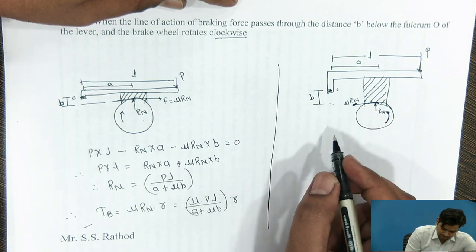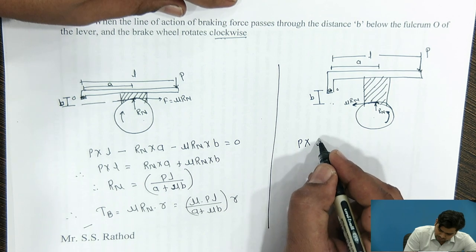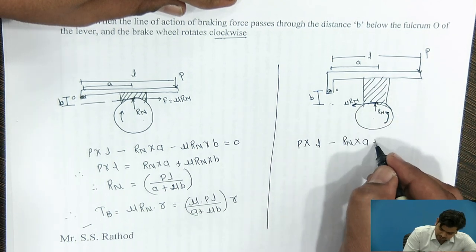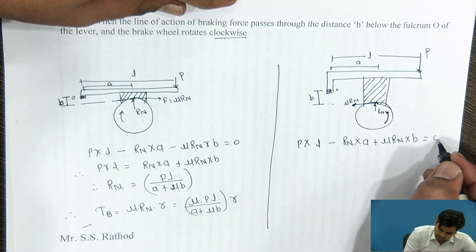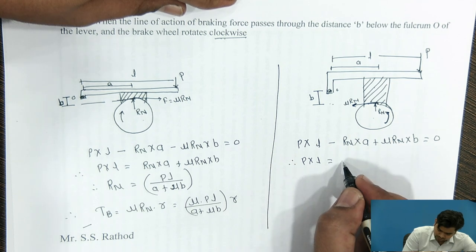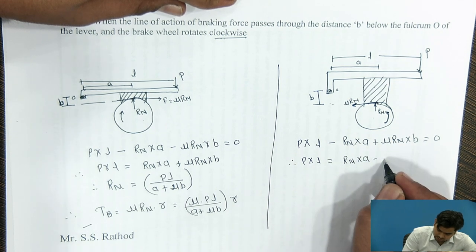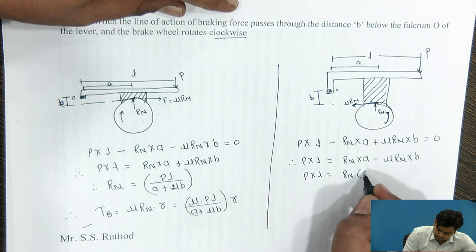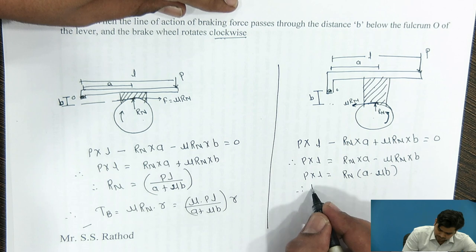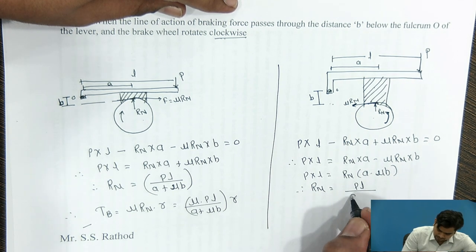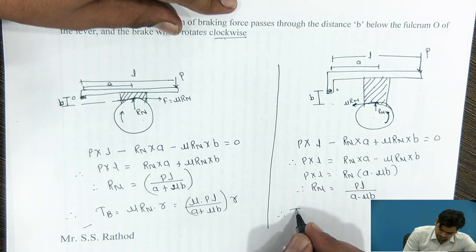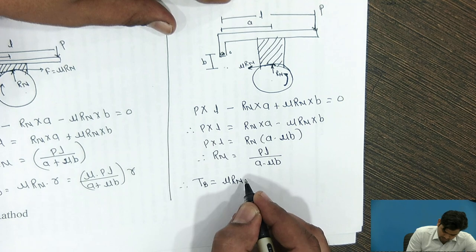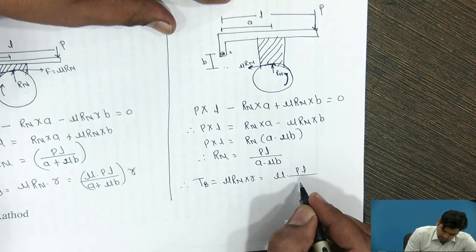Under these circumstances, taking the moment about the fulcrum O: when the line of action of the braking force passes through distance B below the fulcrum O and the brake wheel rotates anticlockwise, the frictional force on the block acts in the reverse direction. We get: P into L minus Rn into perpendicular distance A plus μRn into B equals 0. Therefore P into L equals Rn into A minus μRn into B, so Rn = PL / (A − μB). Therefore, braking torque Tb = μRn·R = μ·R·PL / (A − μB).